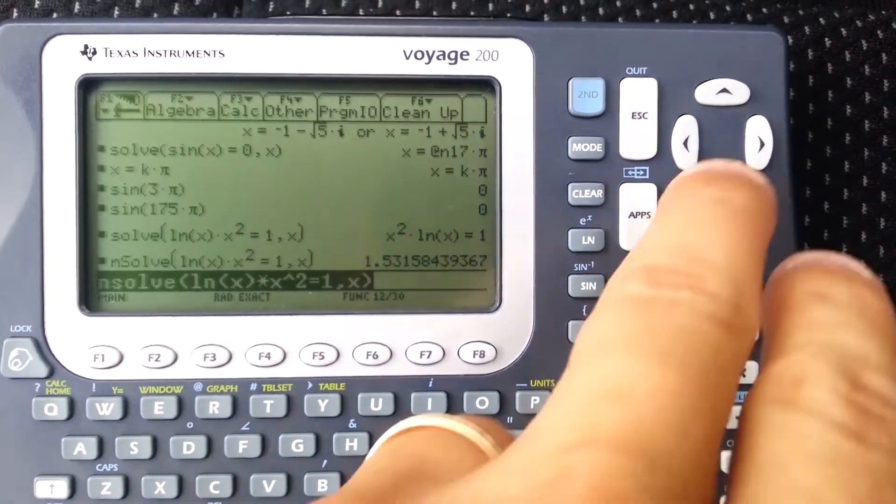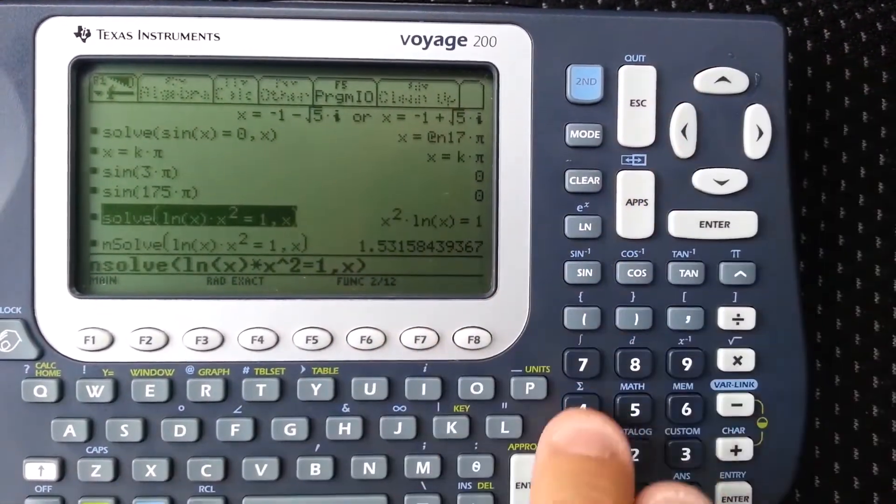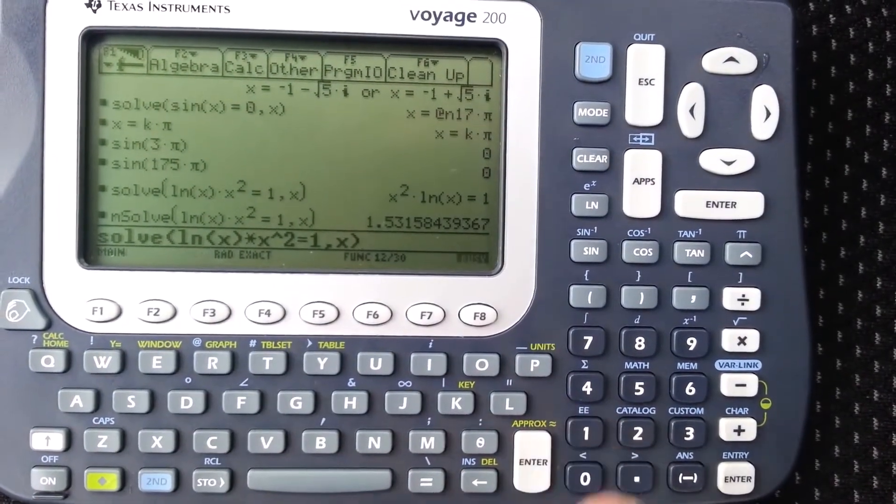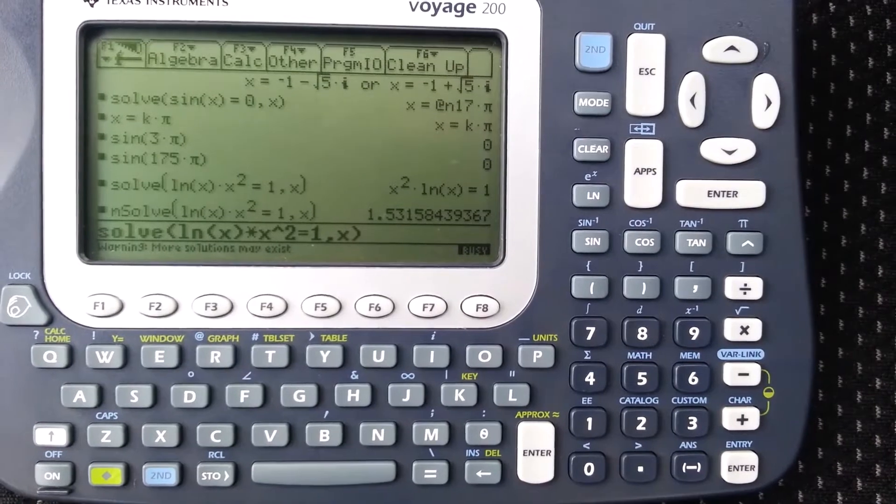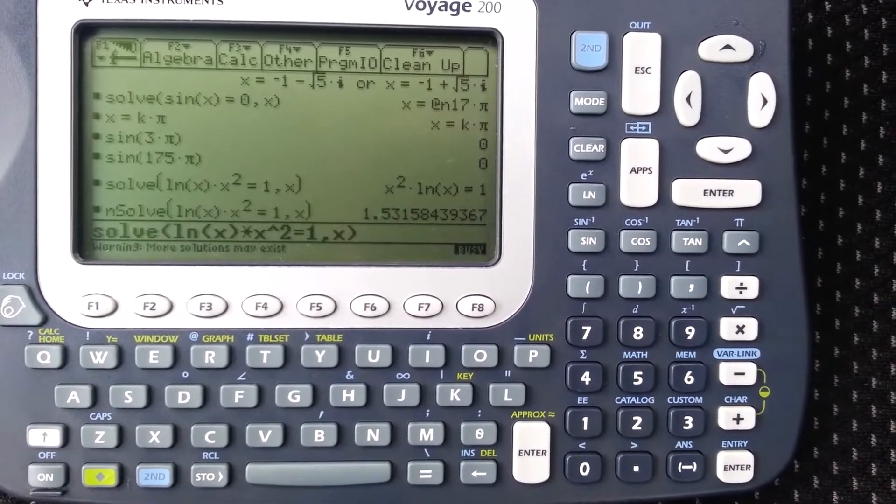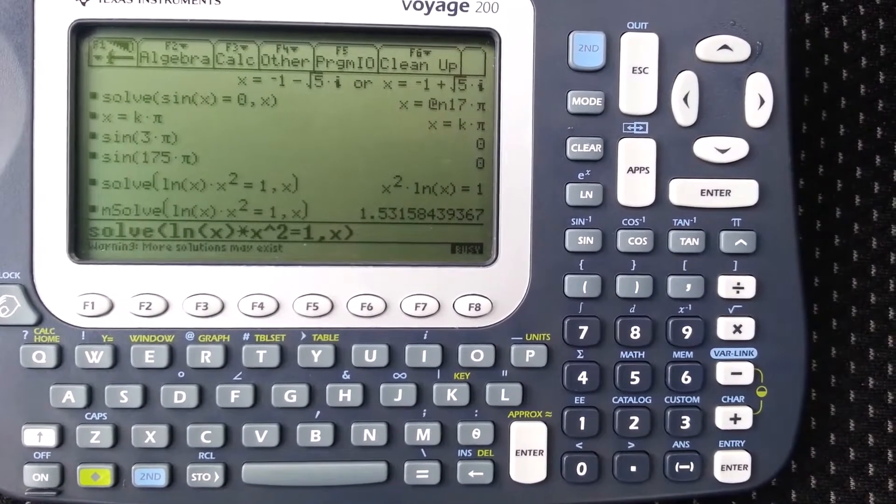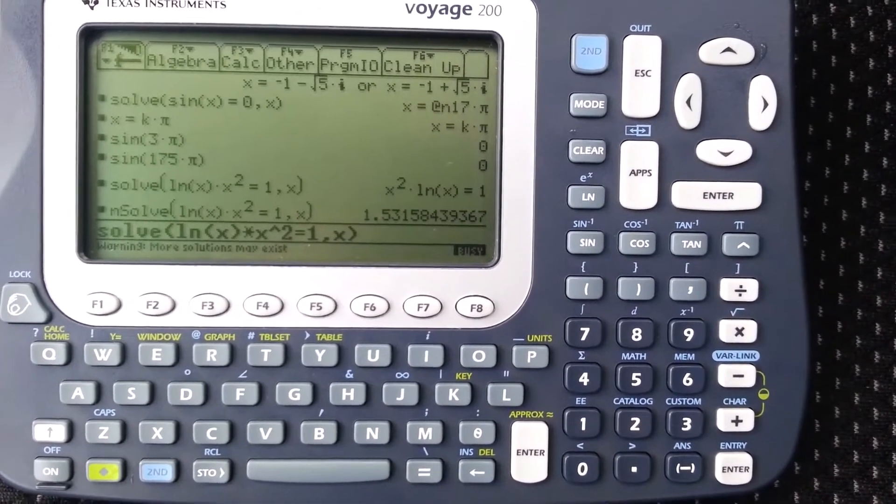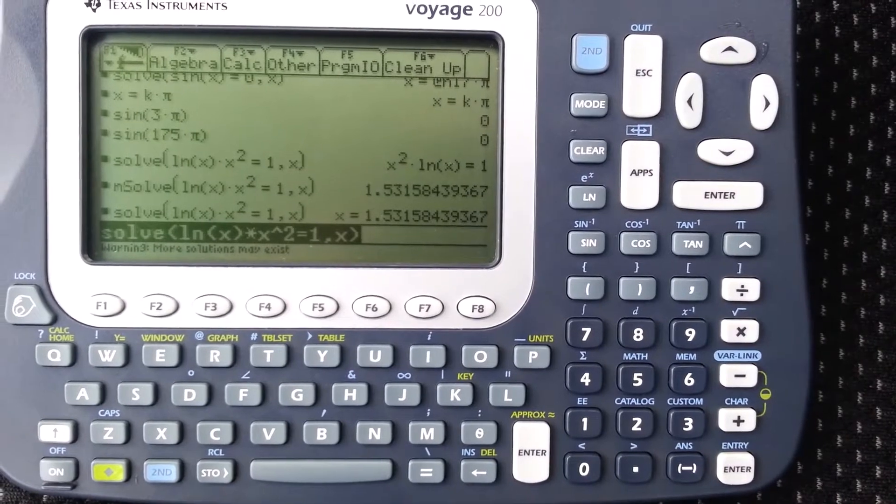Whereas if we did solve, and then we did approximate, it'll probably return it, but I think as you'll see, it'll take a little longer. I would assume because it's using some different type of algorithm to solve it.